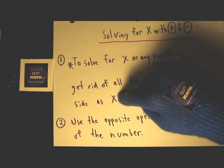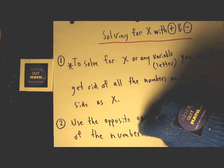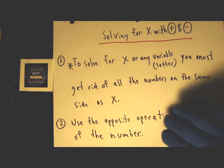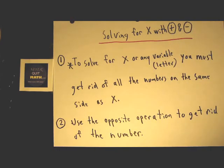Two: use the opposite operation to get rid of the number. That may sound crazy but once we do the examples, memorizing these rules, after we do the examples it's going to make it real simple.